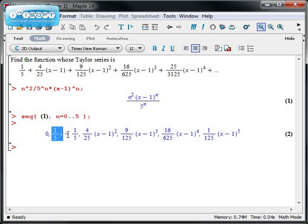And I get 0, 1/5 times (x - 1), 4/25 times (x - 1) squared. I'm not quite there. I seem to be getting the numerators. I'm getting all the right denominators, but I seem to be sort of off by powers right here.